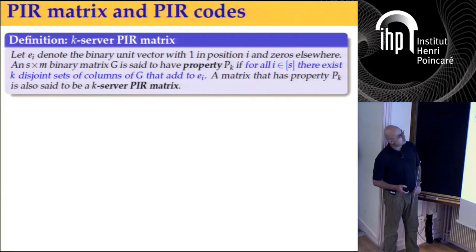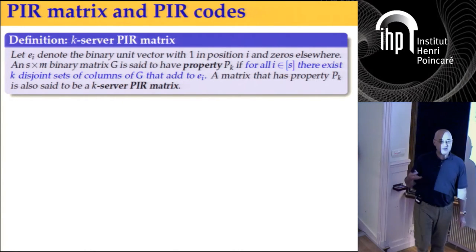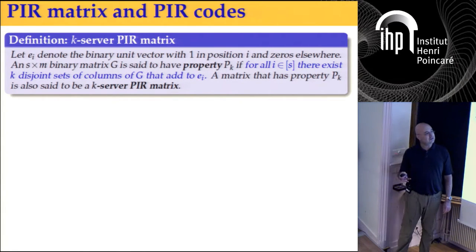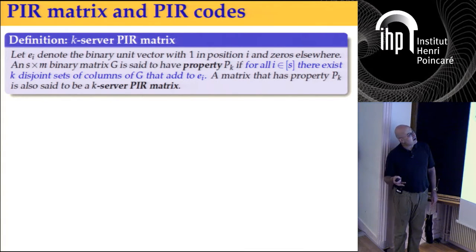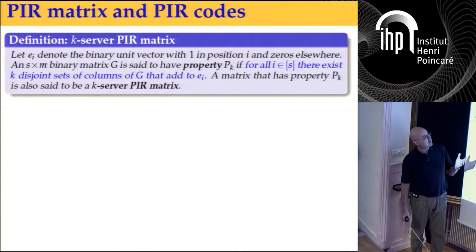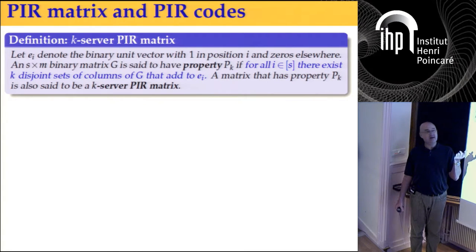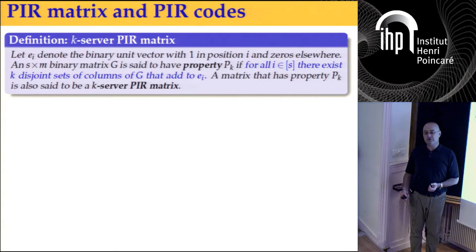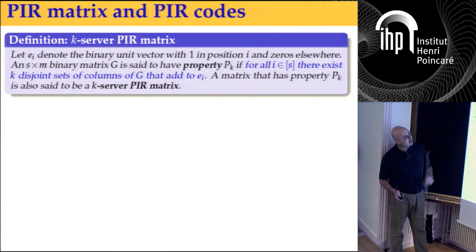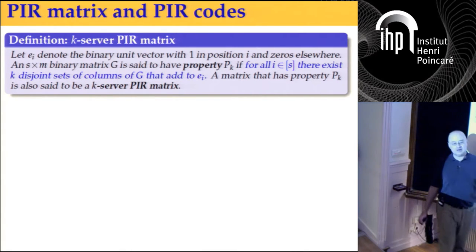These properties are what makes it work. I want to formalize this in terms of a definition. We'll say that a matrix has property P sub K if for every i, I can find K disjoint subsets of columns that add up to the unit vector e sub i with a one in position i. I'll call it property P sub K, or say it is a K-server PIR matrix.